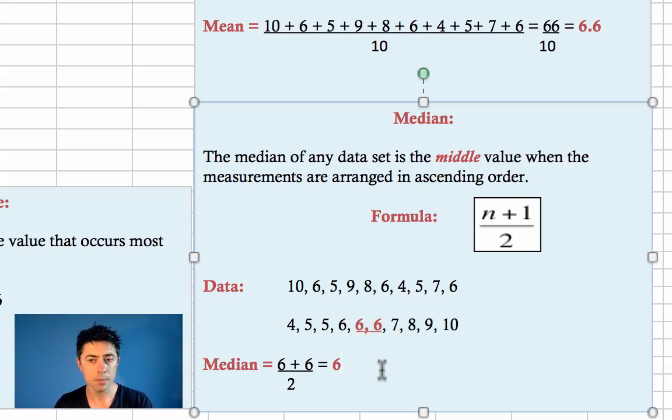So in order to calculate the median there, given that there's no number of 5 and a half, we take the number either side of 5 and a half, which is the 5th number and the 6th number. We add those together, divide it by 2, giving us 6.